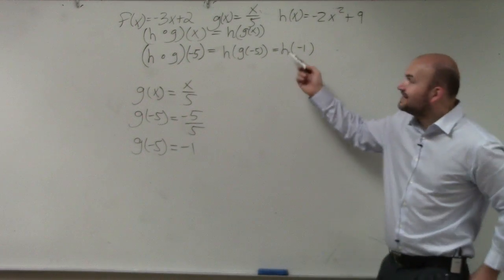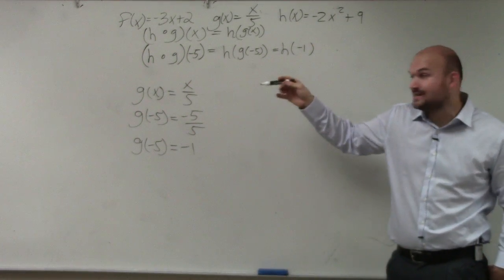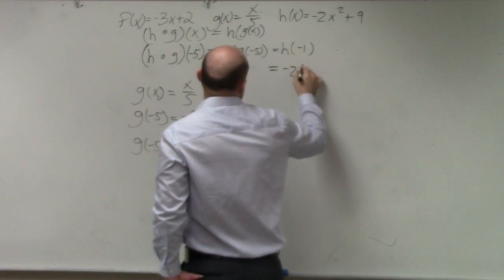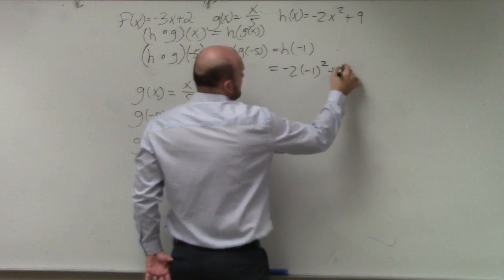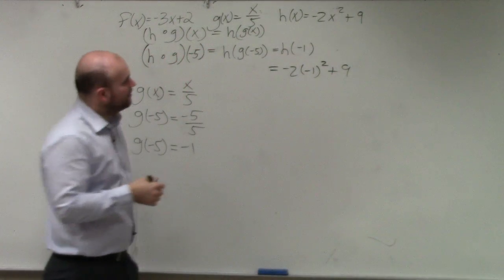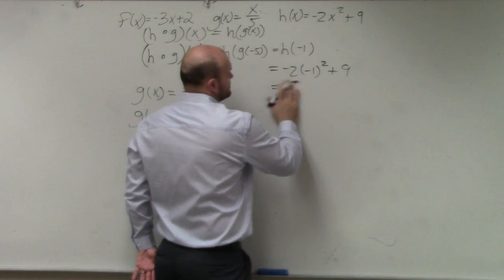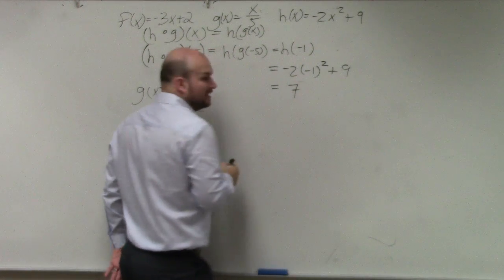So now we have h of negative 1. Can I now plug negative 1 in for x? For h? Of course you can. Negative 1 squared is 1. 1 times negative 2 is negative 2. Negative 2 plus 9 is 7. And done.